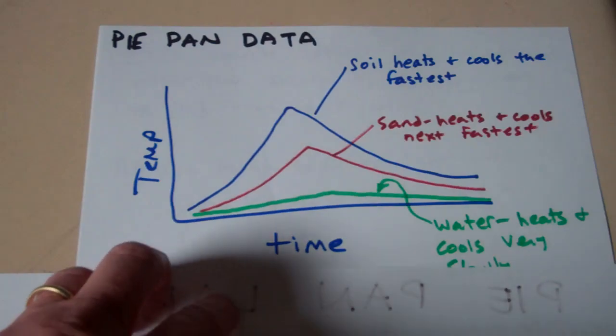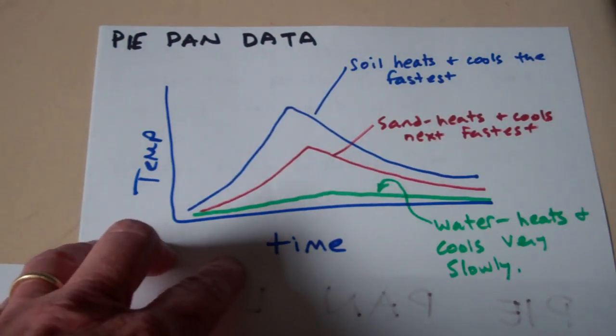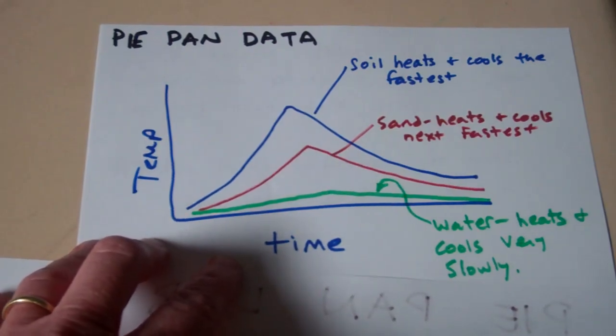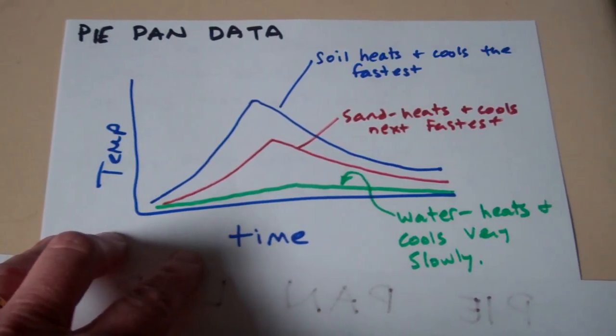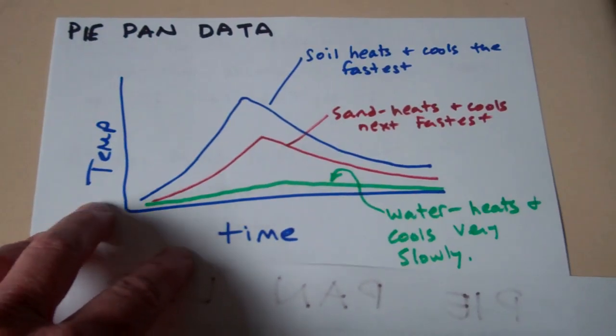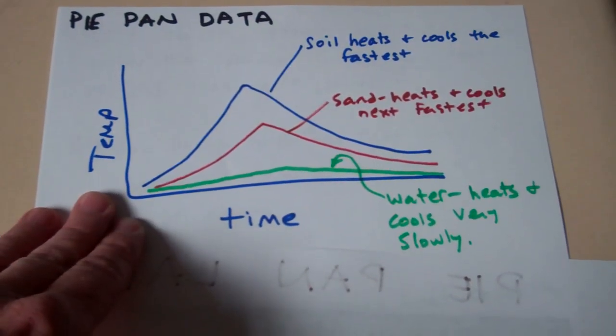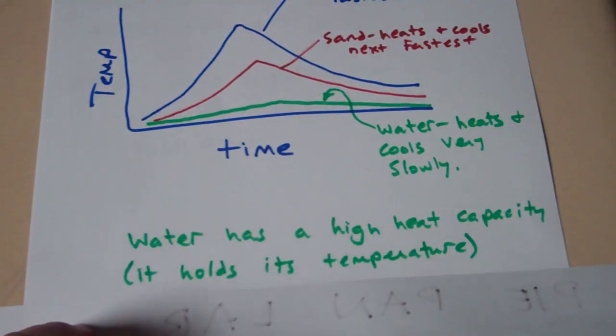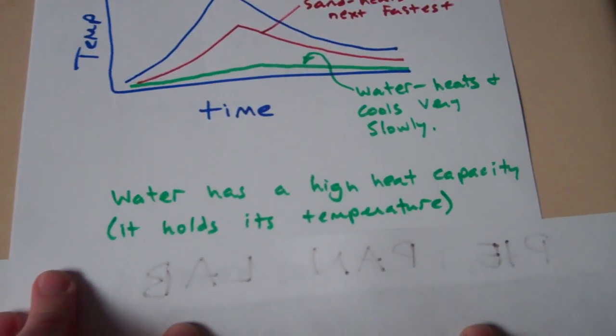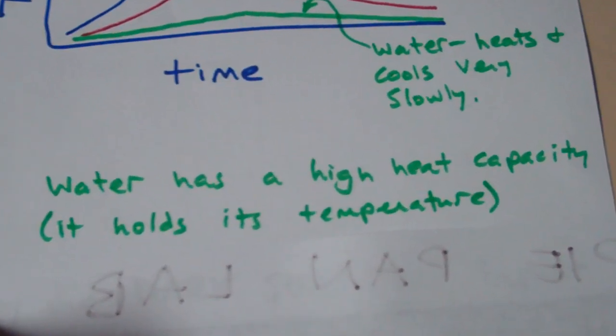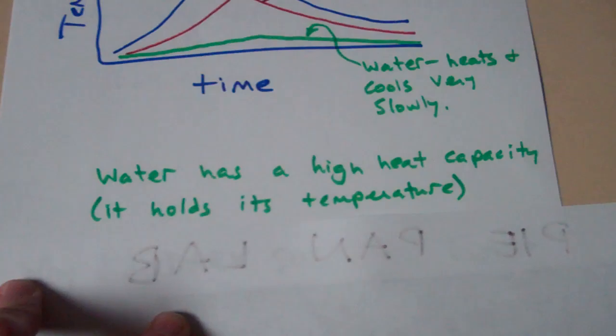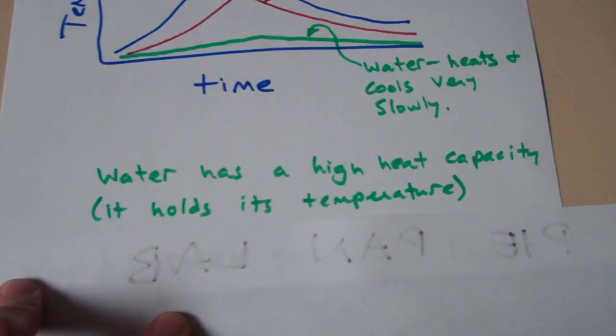So what that meant about water is that water kind of holds its temperature. It heats up very slowly and it cools off very slowly and we have a word for that. We call it heat capacity. So we say that water has a very high heat capacity. It holds its temperature.